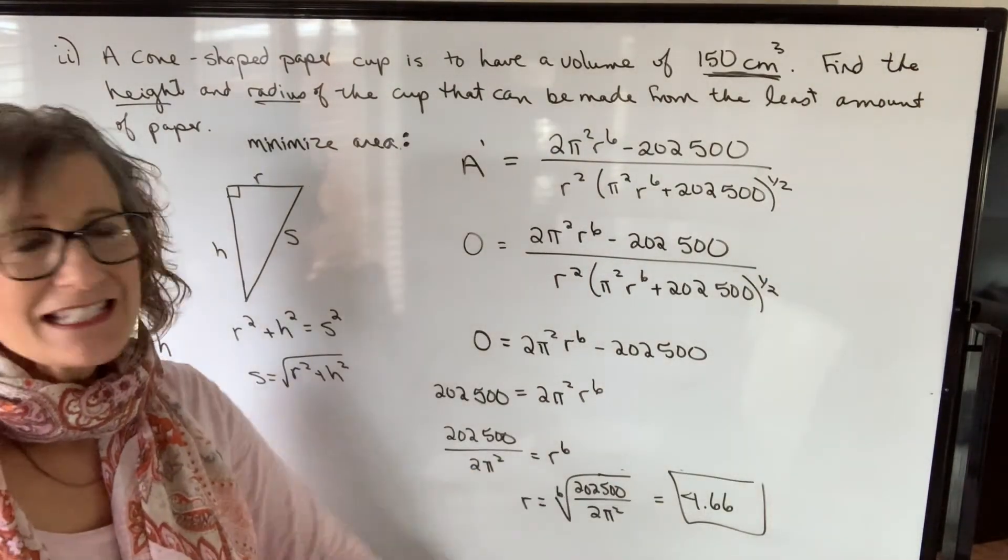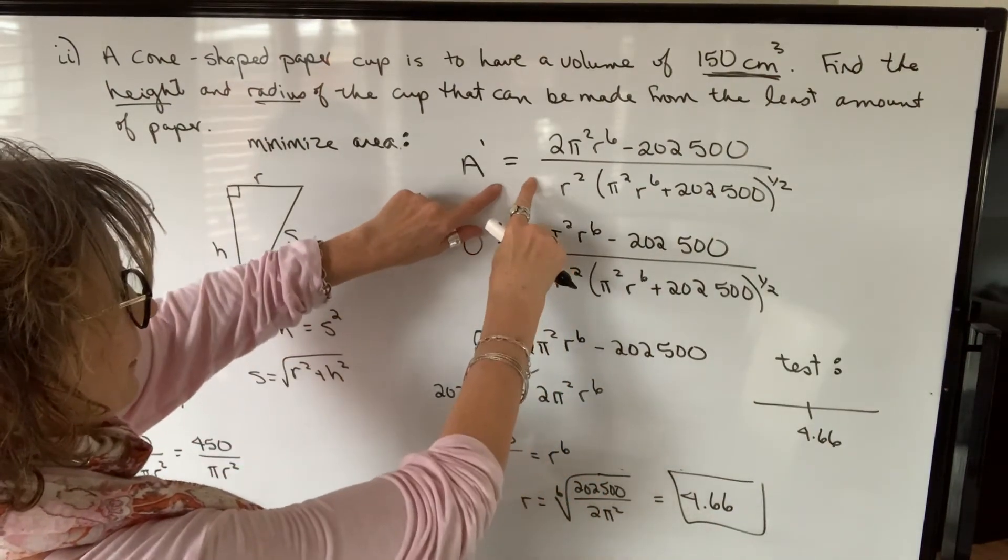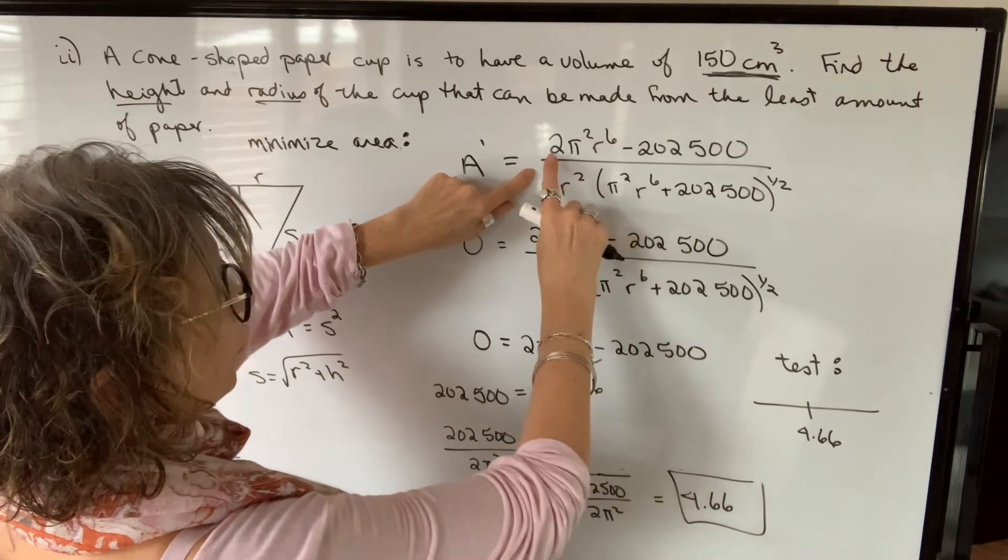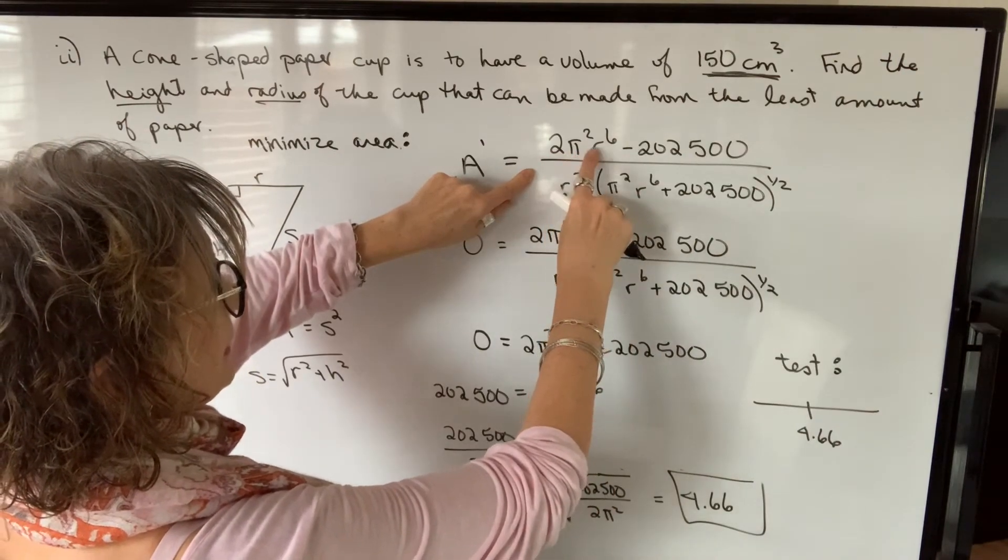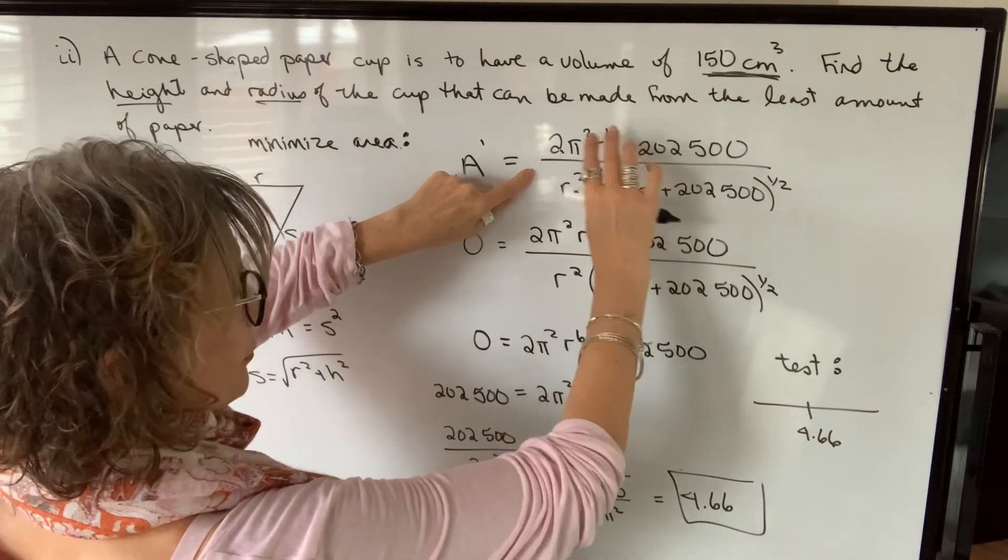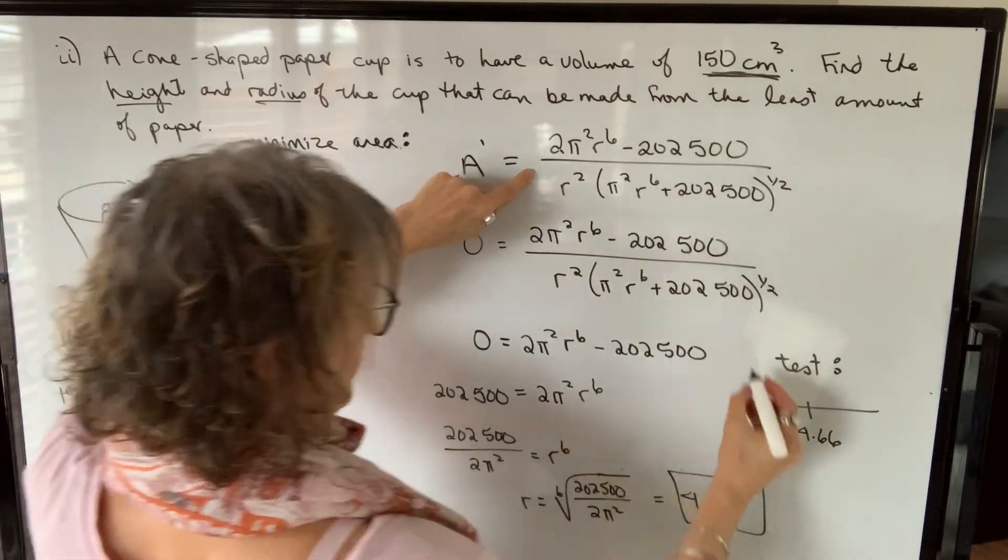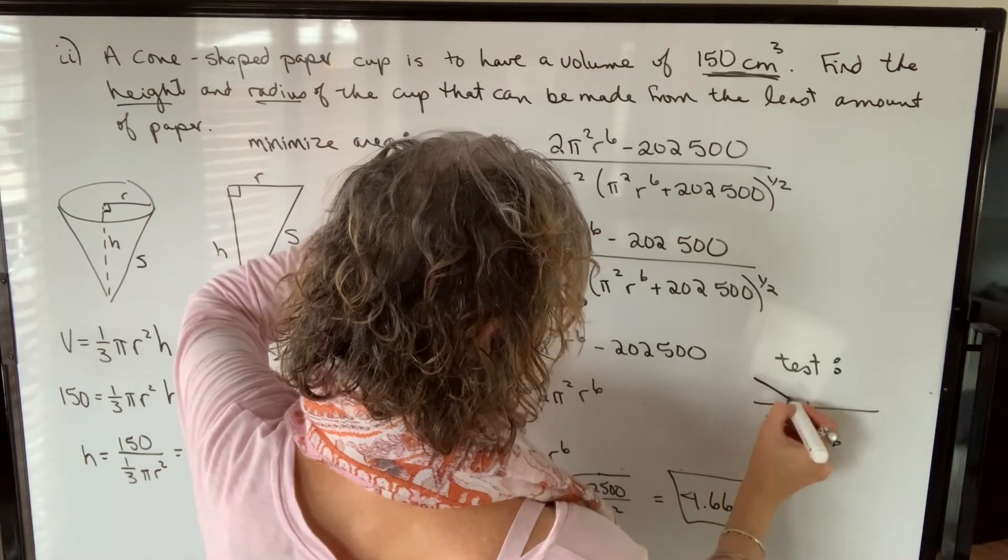Now we have to test this. So we have to test our first derivative. Let's take a value of one. When we take one and subtract this number, our numerator is going to be negative. Denominator will be positive, but that will be negative. So the function is decreasing in that interval.